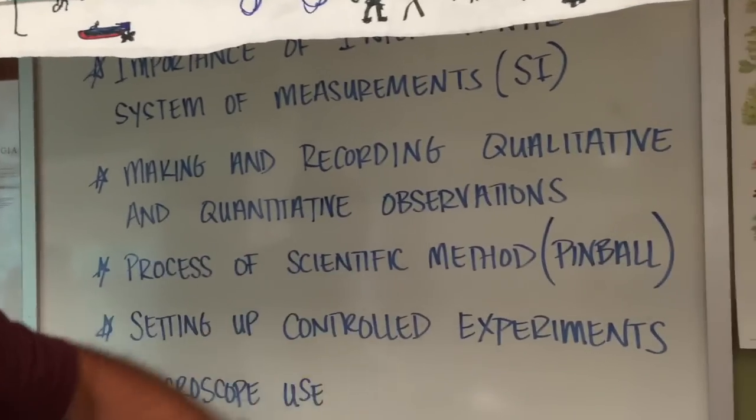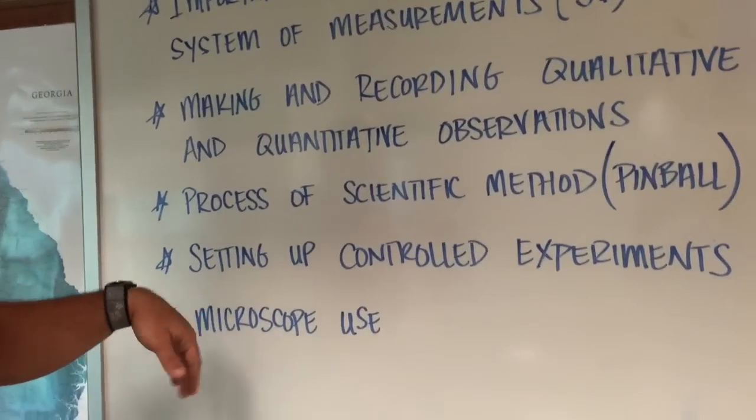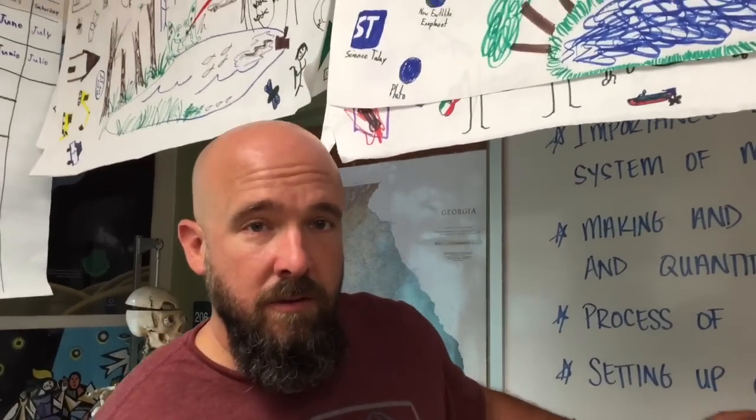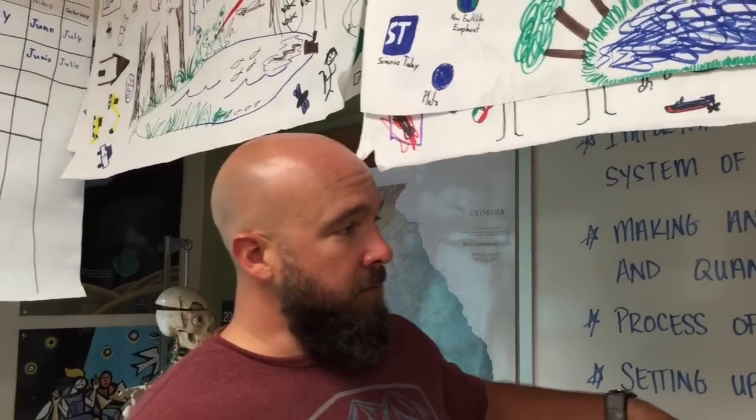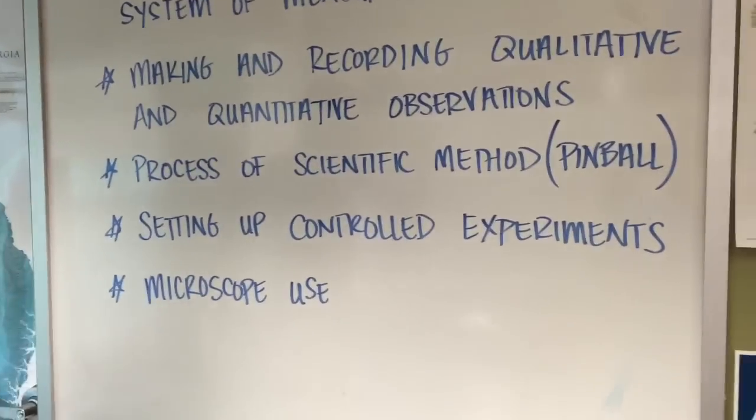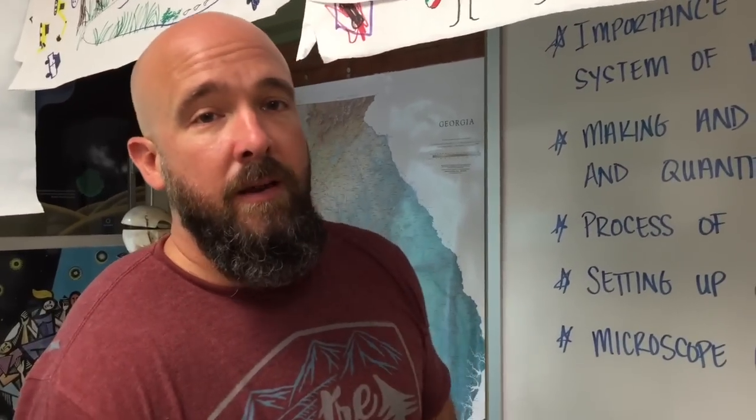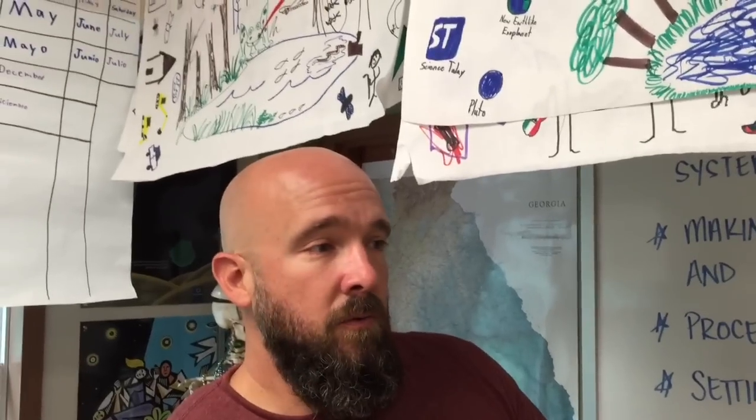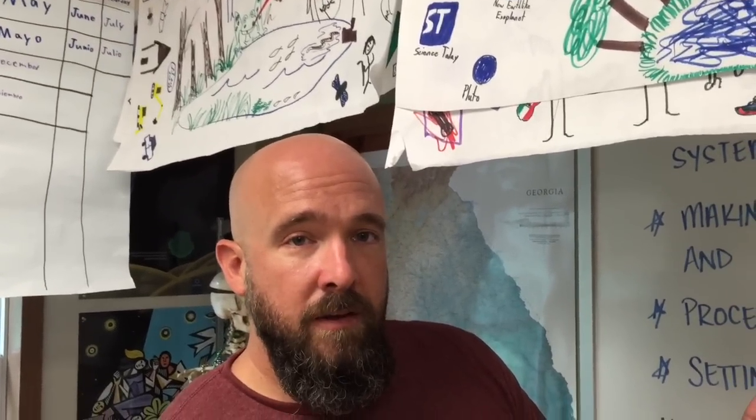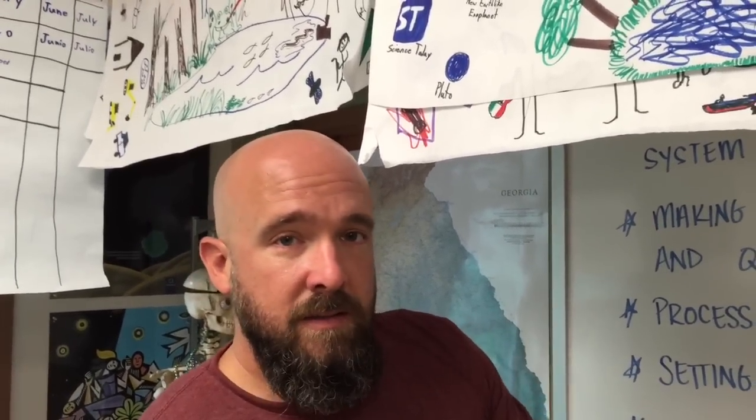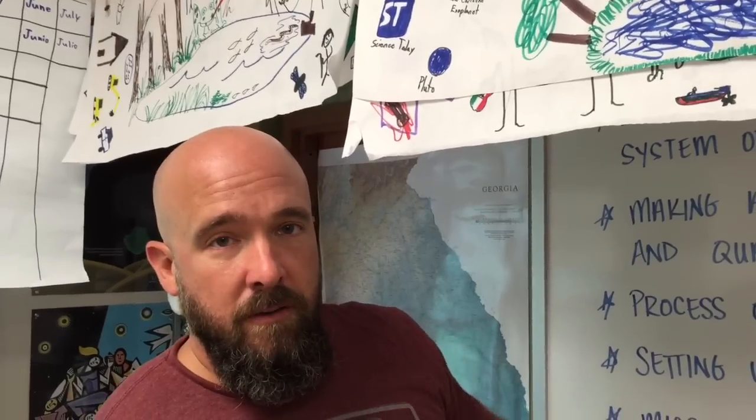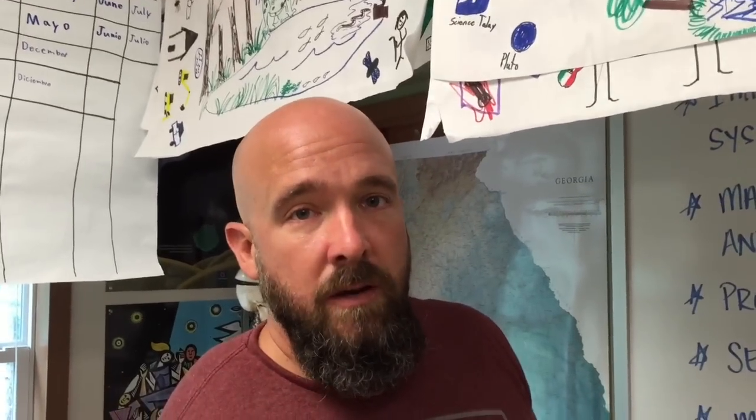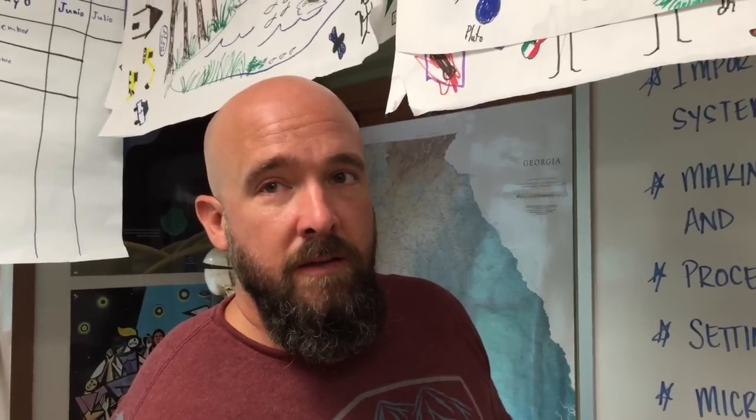Setting up controlled experiments - I have one video that you can use, but also remember we talked about, like blue light today, you can only test one variable at a time and that's called your independent variable. The dependent variable is what you would measure after you're done with the experiment, and then everything else has to stay the same or constant, has to be your control. That way you know that what caused the change was your independent variable, so you're only allowed to test one of those at a time.